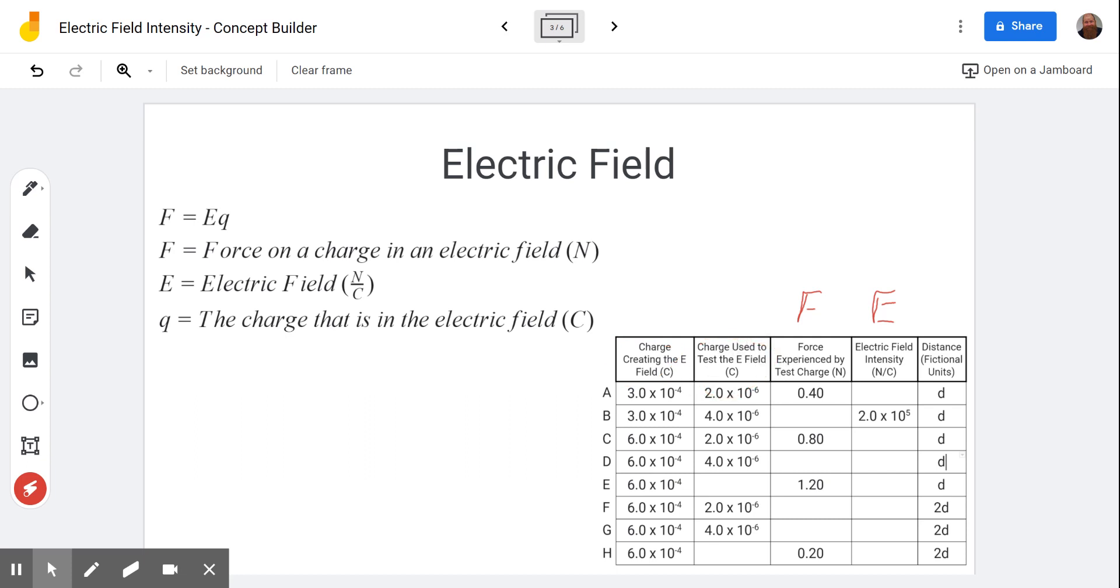But right now, the charge used to test the electric field. That is the one, this is the one that's experiencing the force. So then as we know with any good equation, if you have two of the variables, you can solve for the third one. So any of these rows that have two variables, you could solve for the third one just by rearranging the equation and plugging in. Good old plug and chug. But for the ones that are missing two, we're going to have to do more.